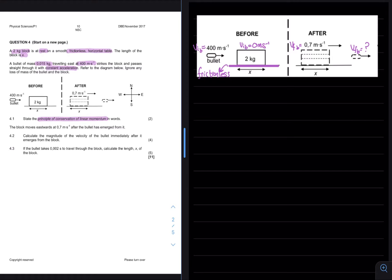It is then said that the block moves eastward after the bullet has emerged from it, as was also indicated on our diagram. 4.2 then asks, Calculate the magnitude of the velocity of the bullet immediately after it emerges from the block for a total of 4 marks.